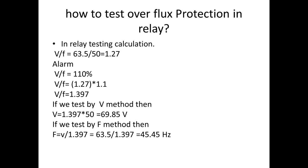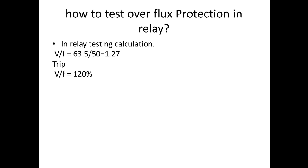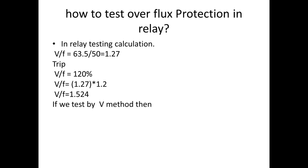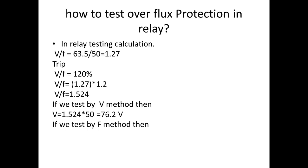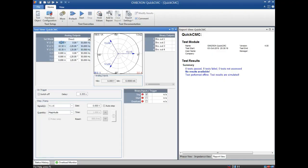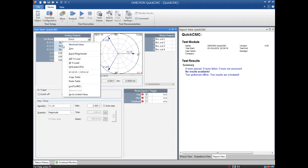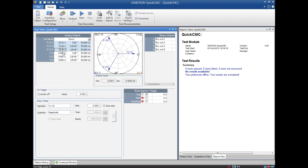Next, for the trip test at 120%: we multiply 1.27 by 1.2 to get V/F = 1.524. Testing by voltage method: V = 1.524 × 50 = 76.2V. We inject slightly above — 76.5V — and wait for 10 seconds, since the trip time delay is 10 seconds, and it will give an overflux trip. If testing by frequency method: the calculated frequency is 41.66 Hz, so we inject slightly below — 41.5 Hz — and wait 10 seconds for the overflux trip.